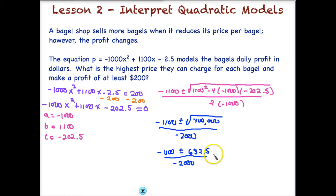Now it's time to break this into our two equations, one with a plus and one with a minus. So our first equation comes to negative 1,100 plus 632.5, all divided by negative 2,000. And when I did this equation, remember do your numerator first, then divide by your denominator, and I come up with approximately 23 cents.